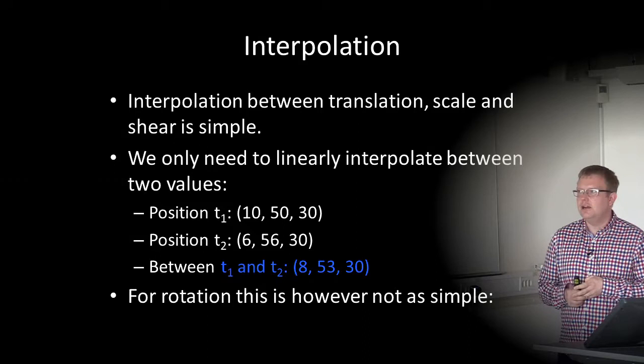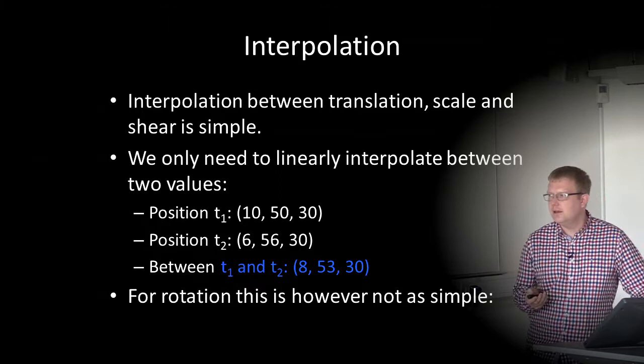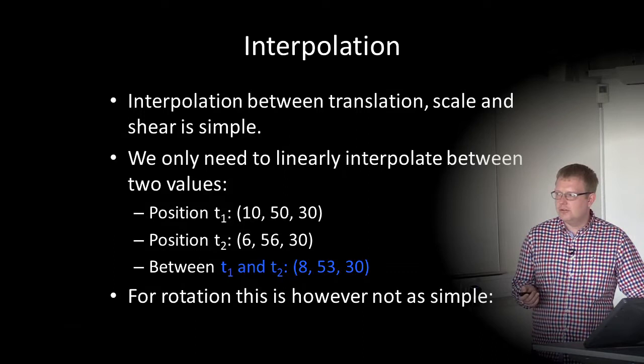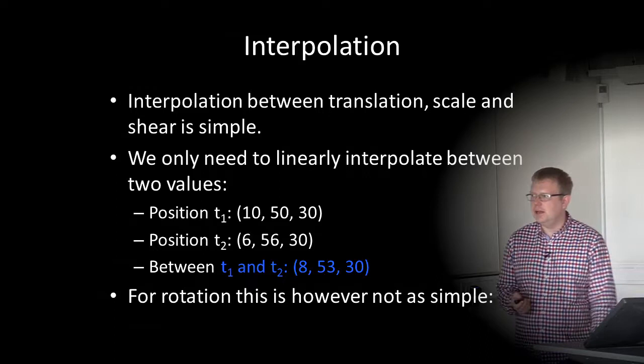Interpolation between translation, scale, and shear is quite simple — we only need to linearly interpolate between two values. For example, if position T1 is (10, 50, 30) and position T2 is (6, 56, 30), then halfway between those two we have position (8, 53, 30). So we can just linearly interpolate between two positions.